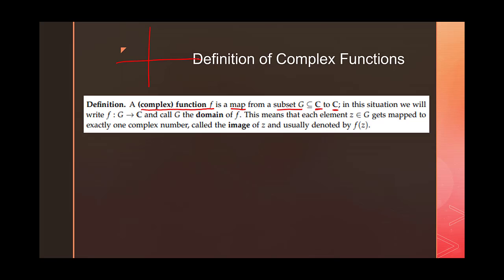Our domain or inputs are coming from some blob G which is in C, and then the function is taking points in here and mapping them into C again. That's the picture I want you guys to have in the back of your heads — this is what the functions we're going to be dealing with are doing.